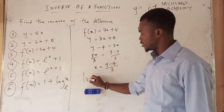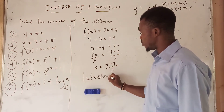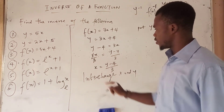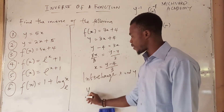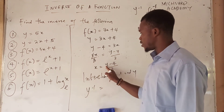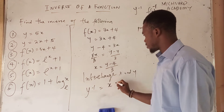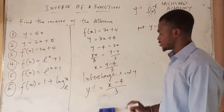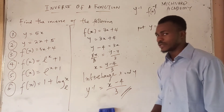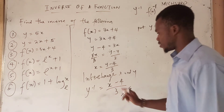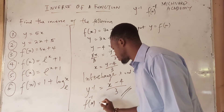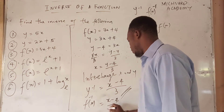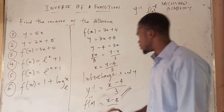Now we want to interchange x and y. If we interchange, we get the inverse y⁻¹ equal to (x minus 4) all over 3. Sometimes you might see the answer written as f⁻¹(x) is equal to (x minus 4) over 3 — the result is still the same.